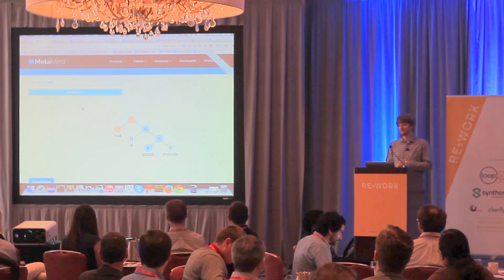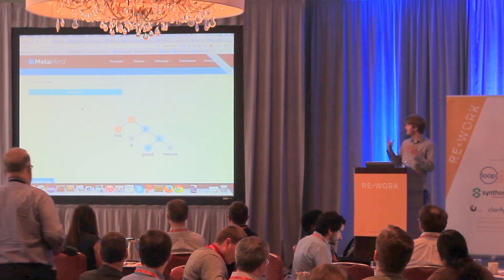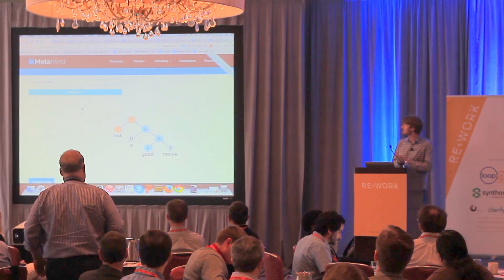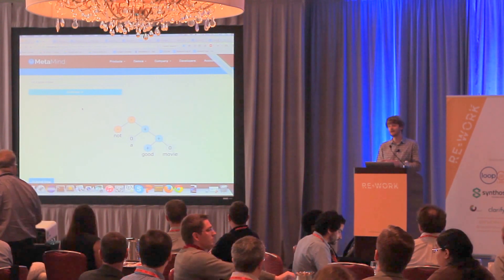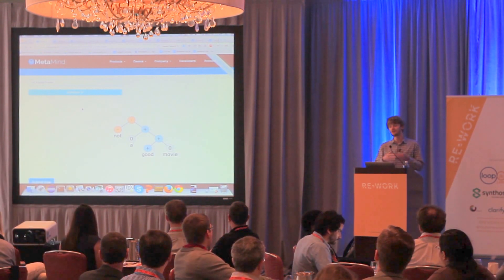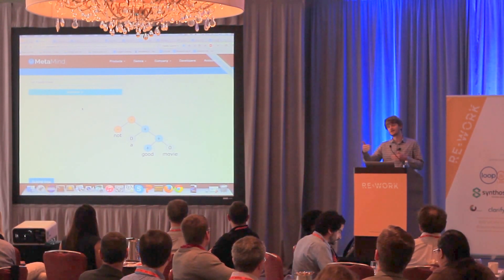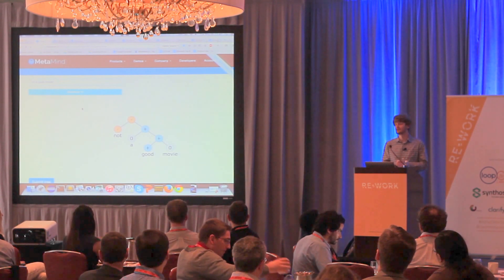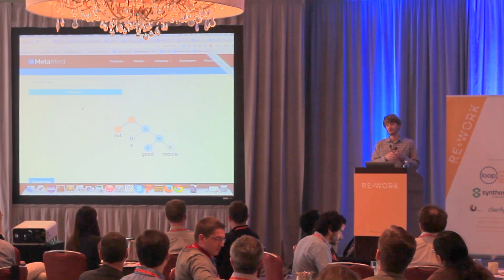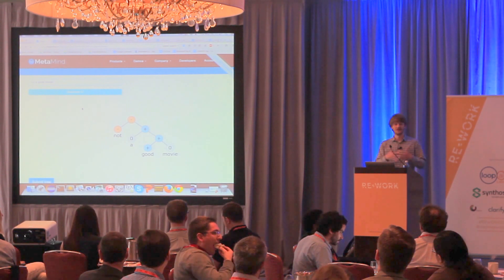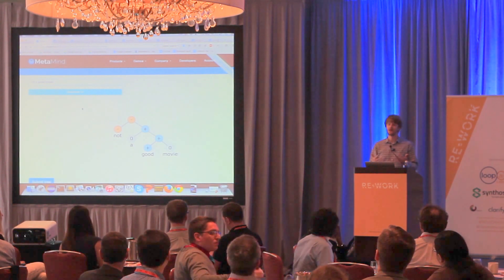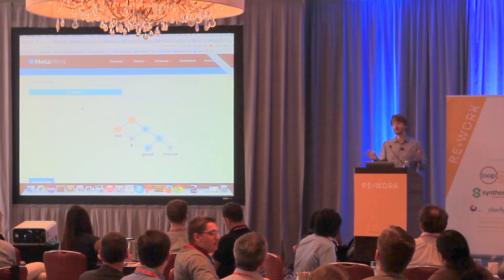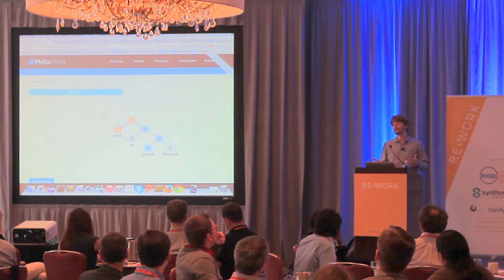We have a new kind of algorithm called a recursive neural network, which is essentially much more accurate than what is commonly used right now in industry. Most people in industry will just take all the words in a sentence, or a tweet, or a document, and sum them up and ignore their order.